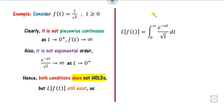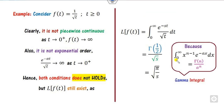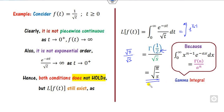We can see this by applying the definition of the Laplace transform to 1/√t. Substituting f(t) = t^(-1/2), we can rewrite the integrand as t^(1/2 - 1)·e^(-st), which is recognized as the gamma integral form. Using the gamma function, this evaluates to Γ(1/2) divided by s^(1/2), where Γ(1/2) = √π. So the Laplace transform of 1/√t equals √π/√s = √(π/s), which exists. This confirms why the conditions are only sufficient, not necessary.